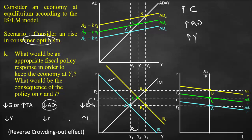Once we decrease interest, investment will be higher — which we call a reverse crowding out. Simply put, in our original scenario, aggregate demand increased by a higher rate, but because this resulted in higher interest, aggregate demand retracted back again, which is why it reached equilibrium.